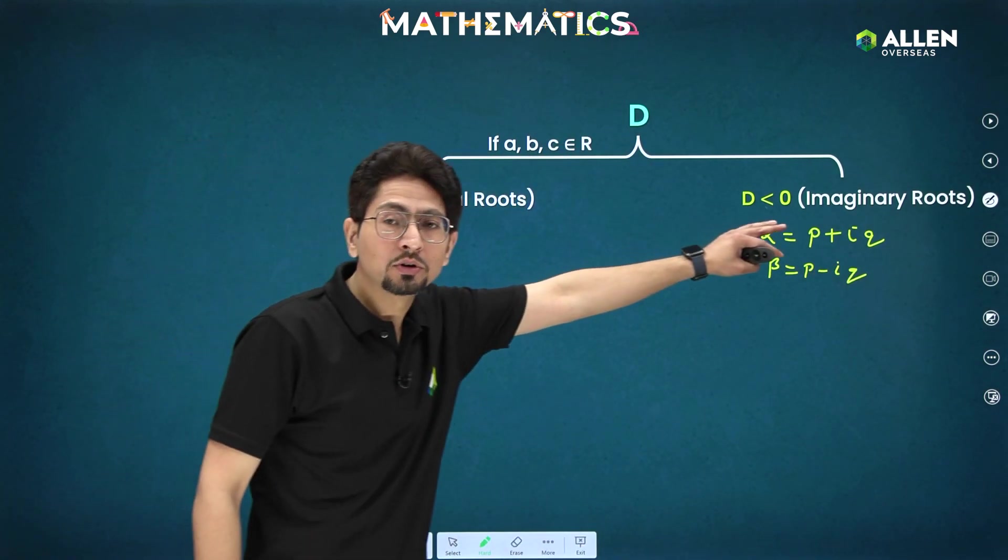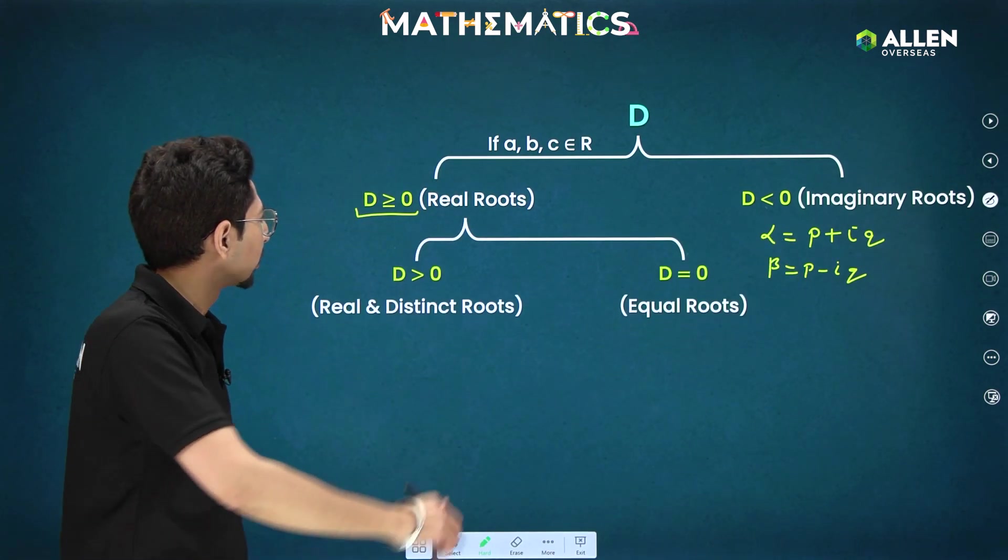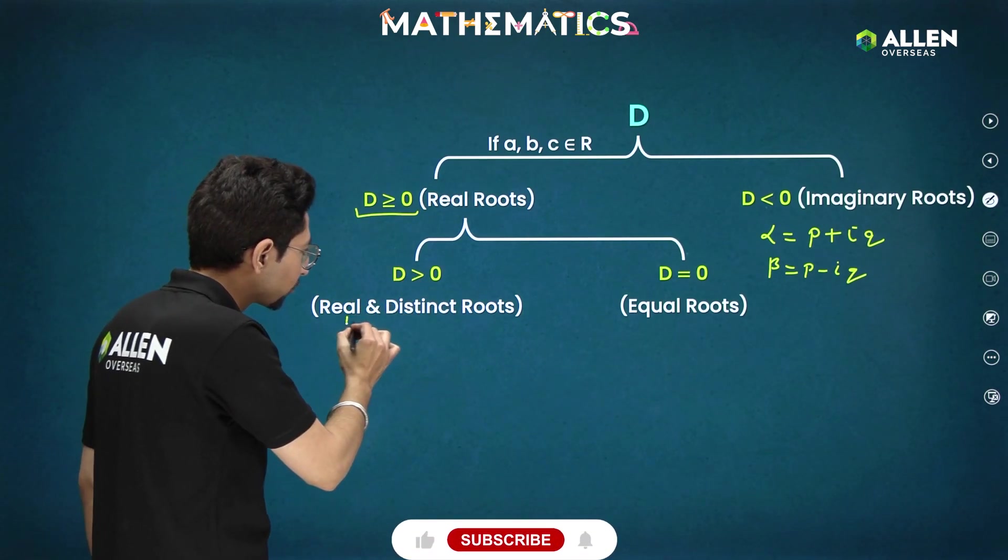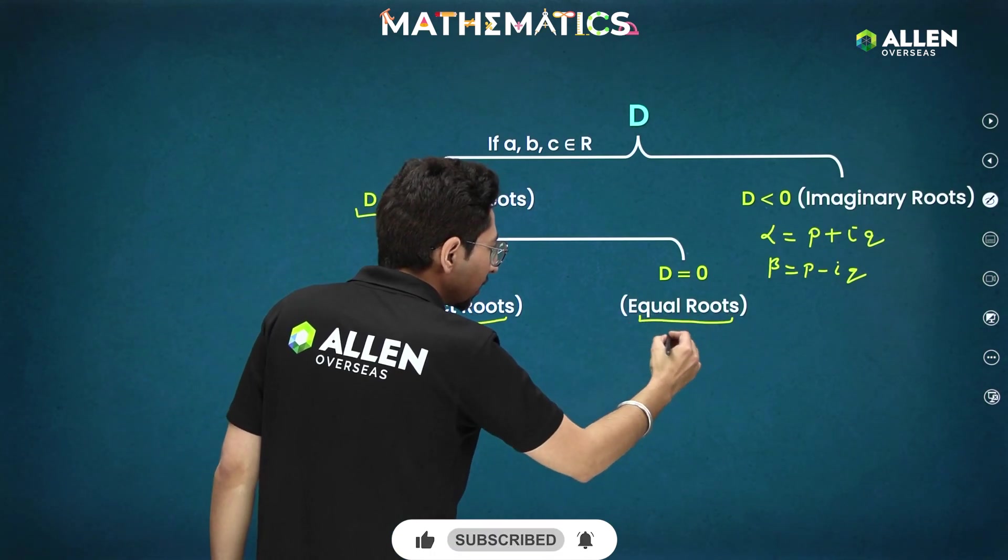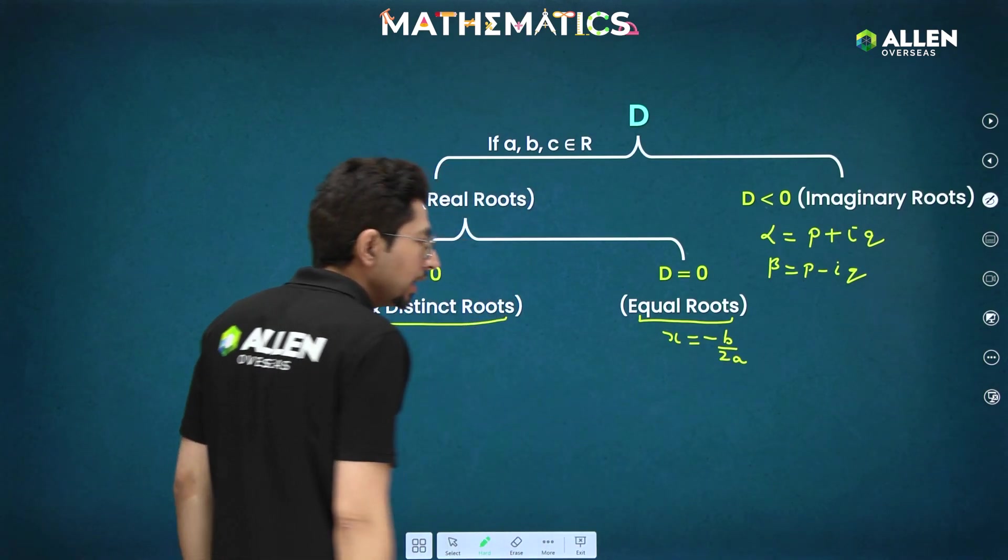So if we know one of the roots, we can directly write another root. Similarly, proceeding further, now in this, if discriminant is only positive, that means real and distinct roots. If D = 0, it will be giving you equal roots. Both roots will be x = -b/2a when D is 0 only.